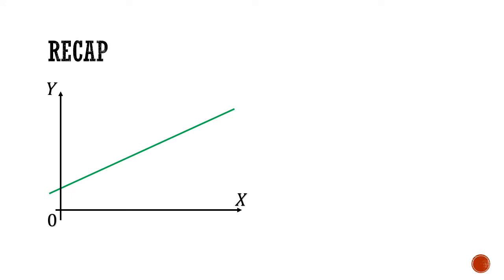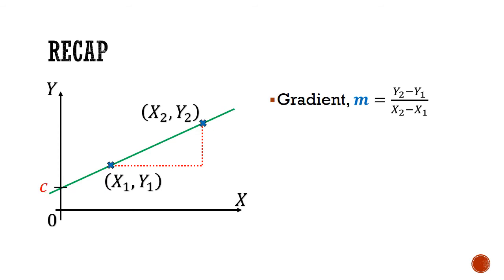Let's begin with a recap. We have learned in the first episode how to find the gradient and the y-intercept of a given Linear Law graph and transform it into a non-linear equation by substituting the found gradient and y-intercept together with the functions for the y and the x into the equation y equals mx plus c.